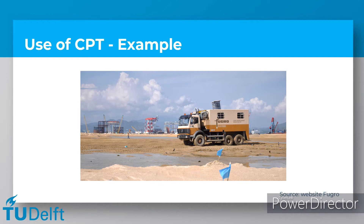Next to the standard CPT cone, extra measurements can be done. Examples are measuring pore water pressure or magnetism. The detection of magnetism is especially useful to detect the presence of metal objects — for example, undetonated bombs from World War II.